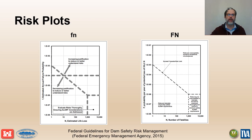The annual probability of failure is commonly used on the little fn plot as an estimate of the individual risk, assuming the most at-risk individual will be exposed to the flood and will perish. Risk estimates are typically portrayed as a collection of points. The plot on the right is known as the big fn plot — a life loss exceedance curve portraying the annual exceedance probability of life loss on the vertical axis and the corresponding life loss value on the horizontal axis.